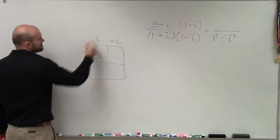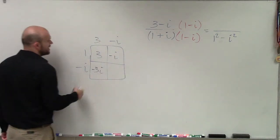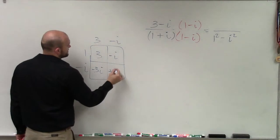Over here, we have three times one is three. One times i is negative i. Three times negative i is negative three i. Negative i times negative i is positive i squared.